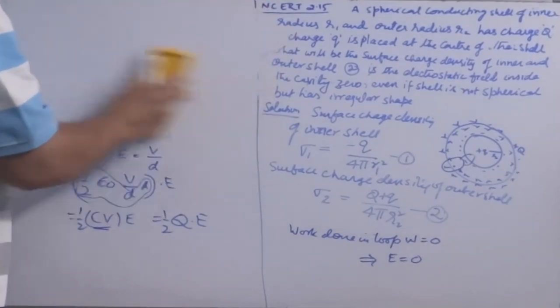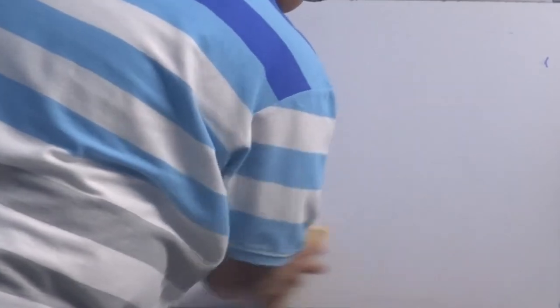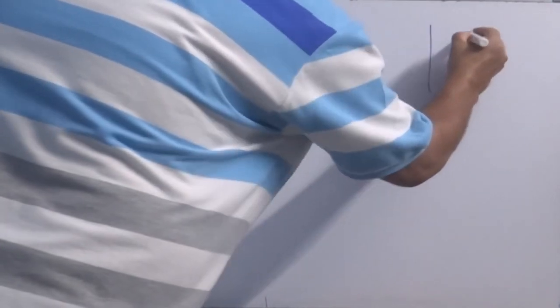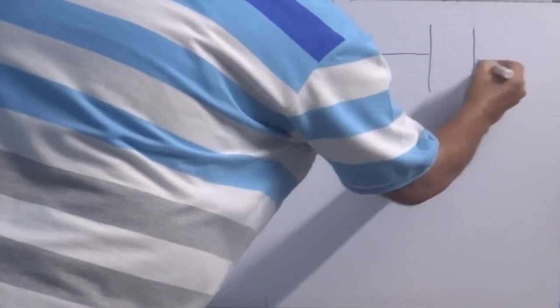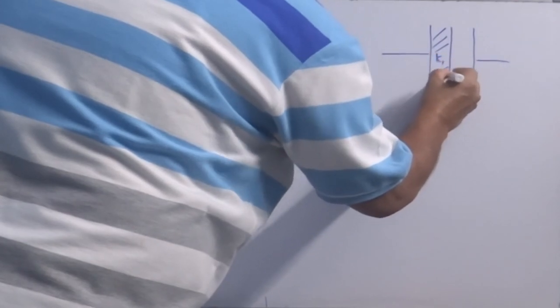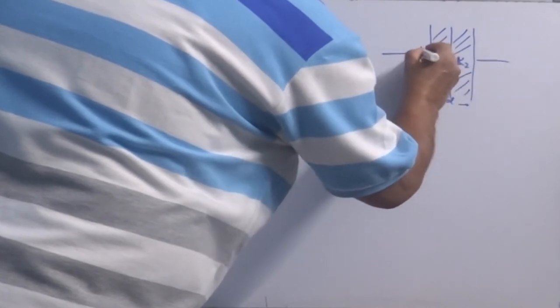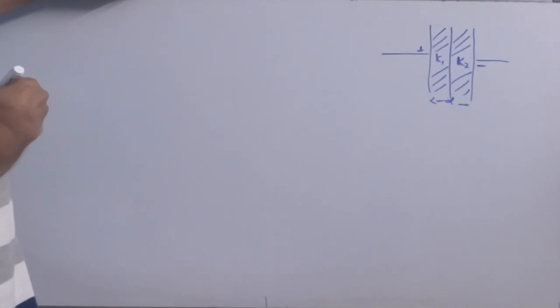Let us see two more examples using a dielectric slab between parallel plates of a capacitor. Consider two cases. Case number one: this is a parallel plate capacitor with separation distance D. Two dielectric slabs are introduced, dividing the capacitor into two halves with dielectric constants K1 and K2.